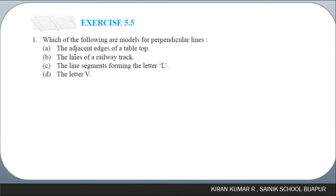The adjacent edges of the table top — this is a model for perpendicular lines, as the edges are perpendicular to each other. The lines of a railway track — no, they are not perpendicular; they run parallel to each other. The line segments forming the letter L — yes, there are two line segments which are perpendicular to each other, so it represents a model for perpendicular lines.